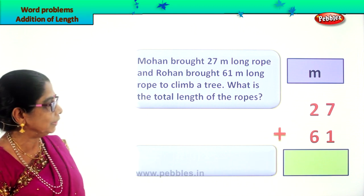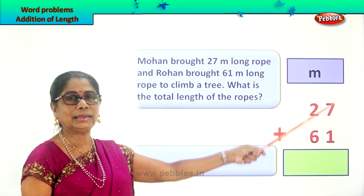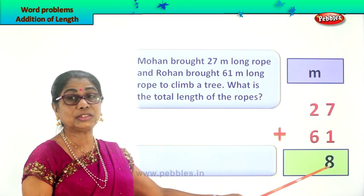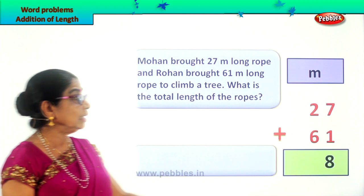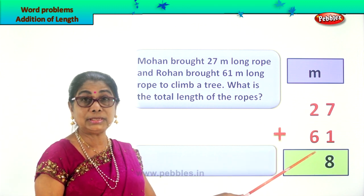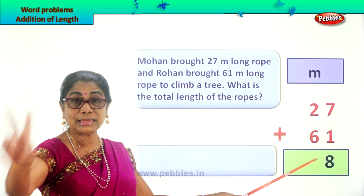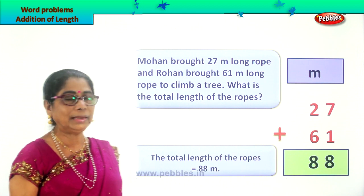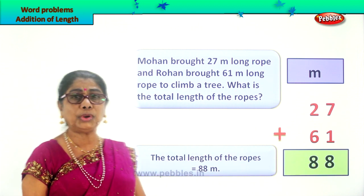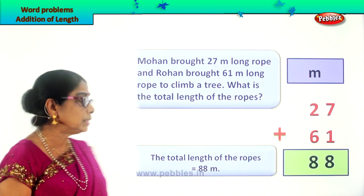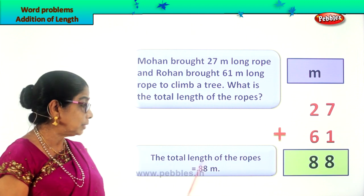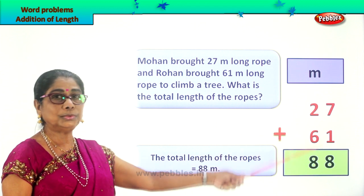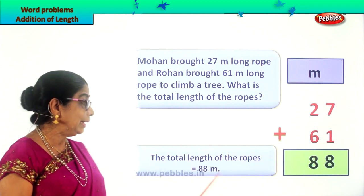Let's add the ones first. 7 plus 1 is 8. We write down 8. Here you have 2 plus 6. 6 plus 2 is 8. So we write down 8. The total length of the ropes equals 88 meters. The total length of the two ropes equals 88 meters.